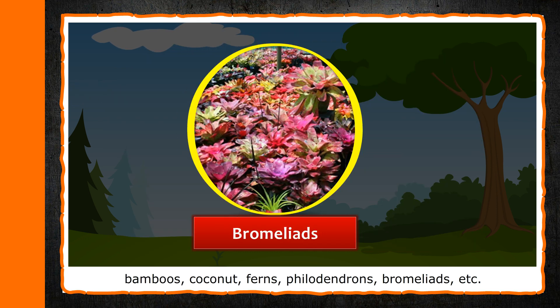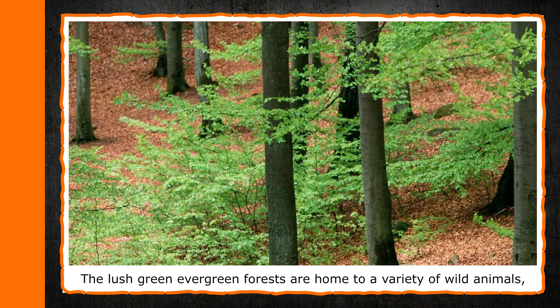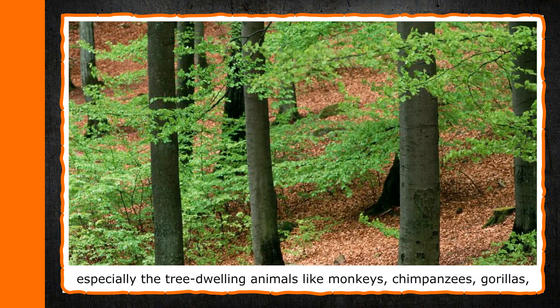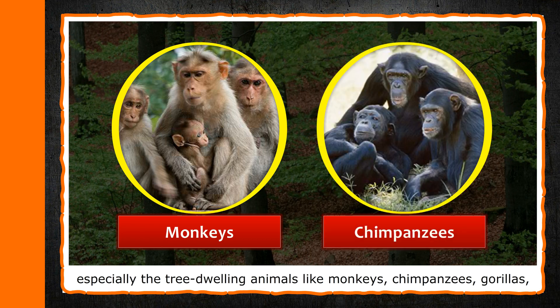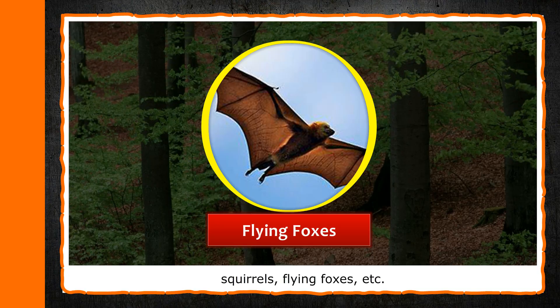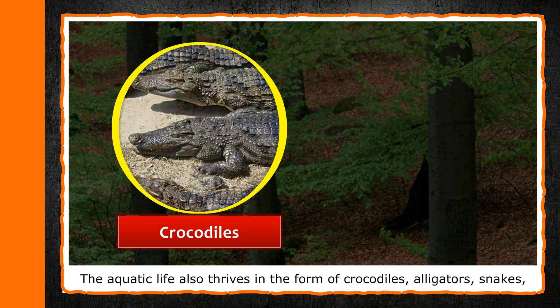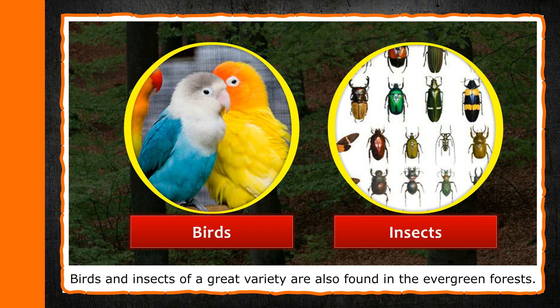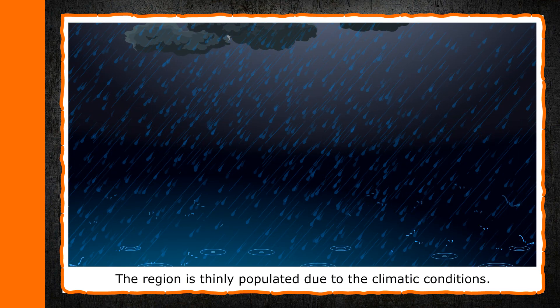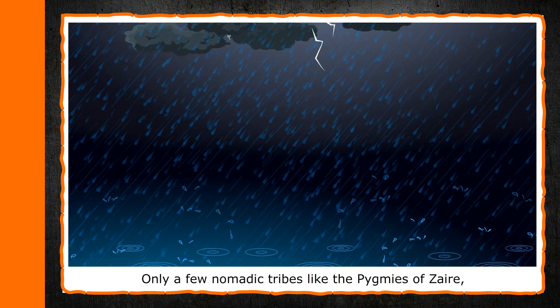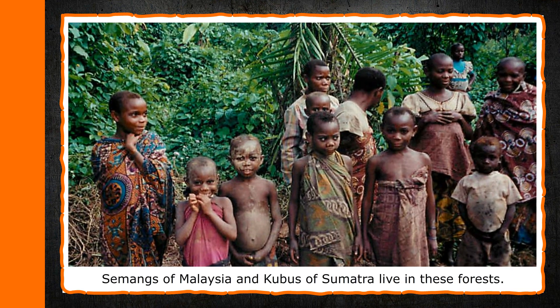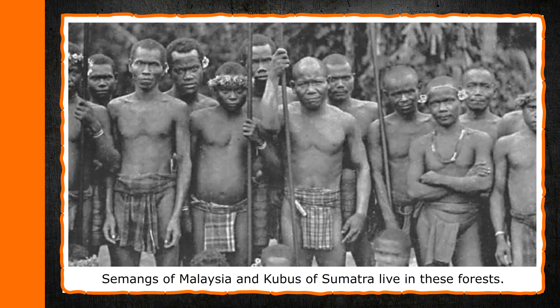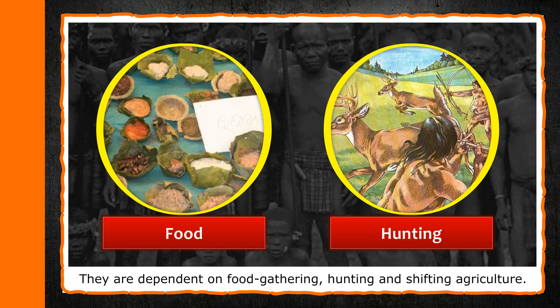Wildlife. The lush green evergreen forests are home to a variety of wild animals, especially tree-dwelling animals like monkeys, chimpanzees, gorillas, squirrels, flying foxes, etc. The aquatic life also thrives in the form of crocodiles, alligators, snakes, turtles, fish and others. Birds and insects of a great variety are also found in the evergreen forests. Human Life. The region is thinly populated due to the climatic conditions. Only a few nomadic tribes like the Pygmies of Zaire, Semang of Malaysia and Kubus of Sumatra live in these forests. They are dependent on food gathering, hunting and shifting agriculture.